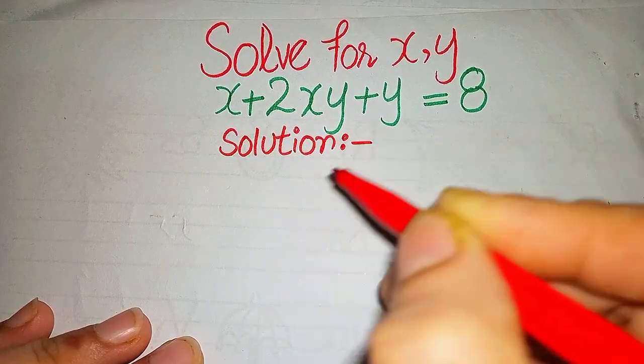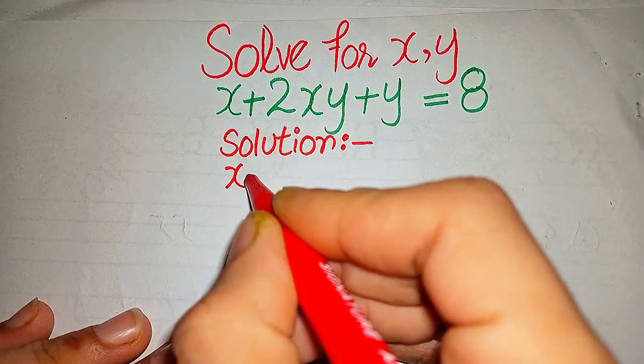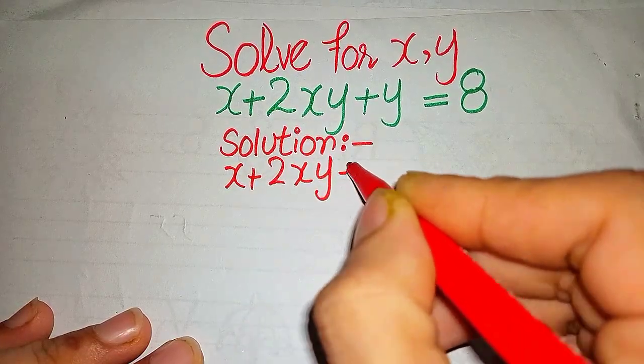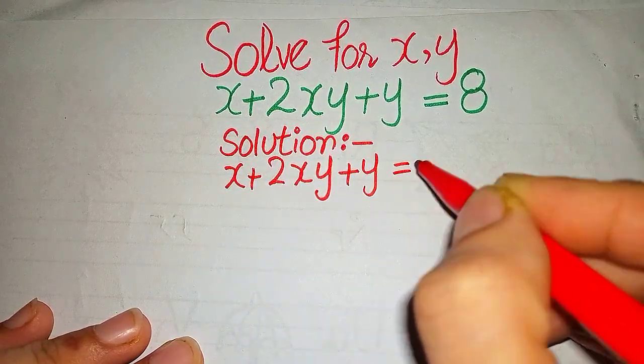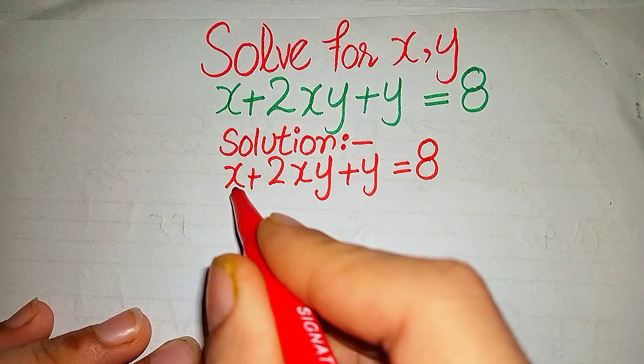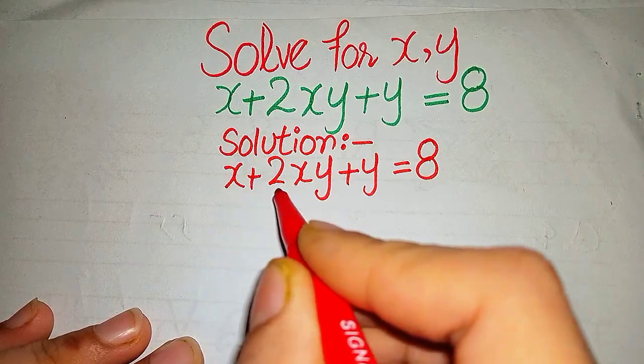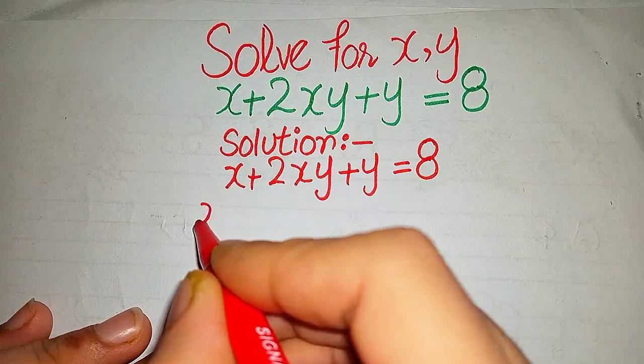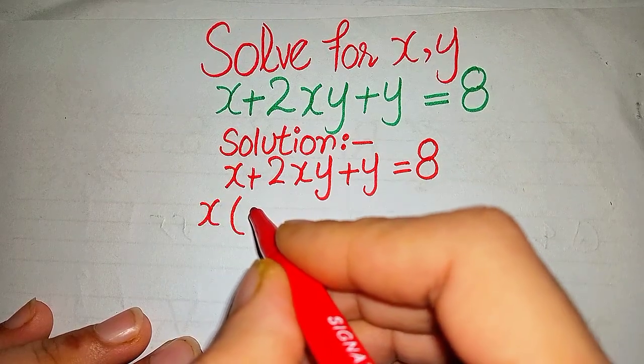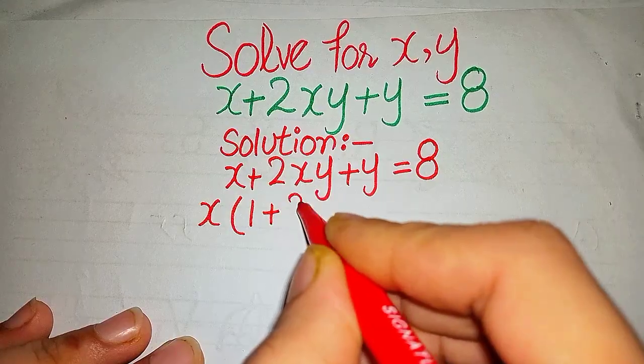First of all, we write this equation x + 2xy + y = 8. As we know that x is common in both these terms, so we take x common here and it would become x(1 + 2y) + y = 8.